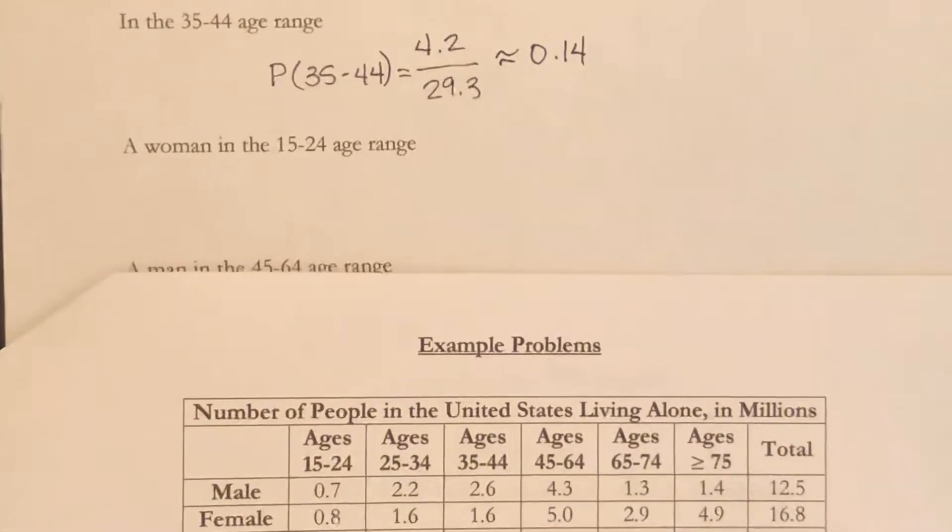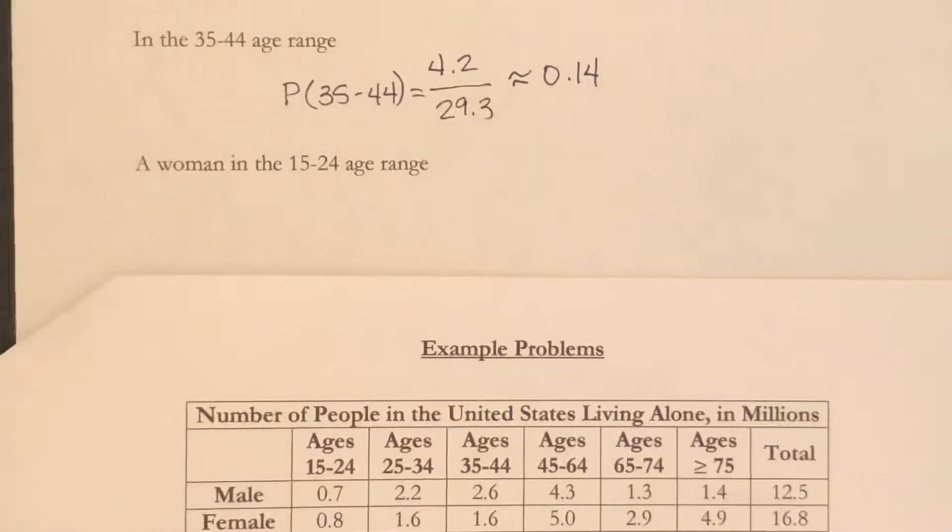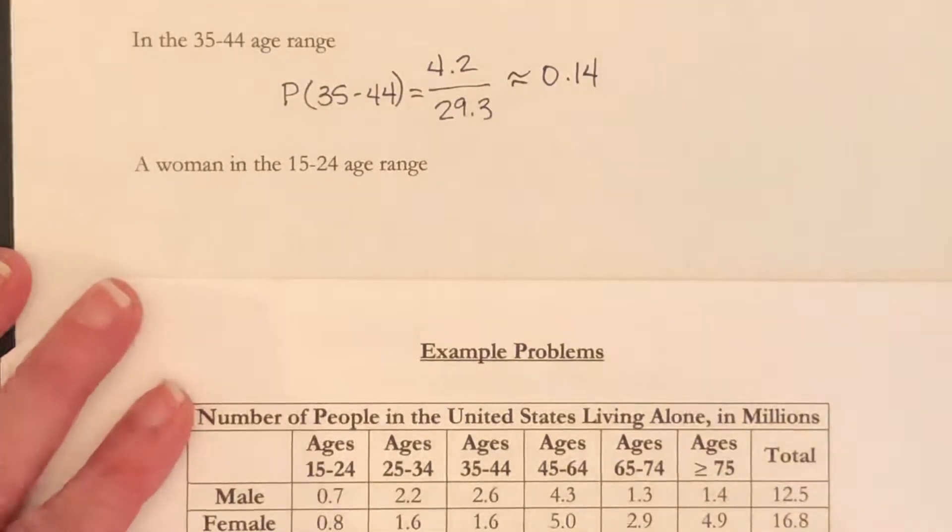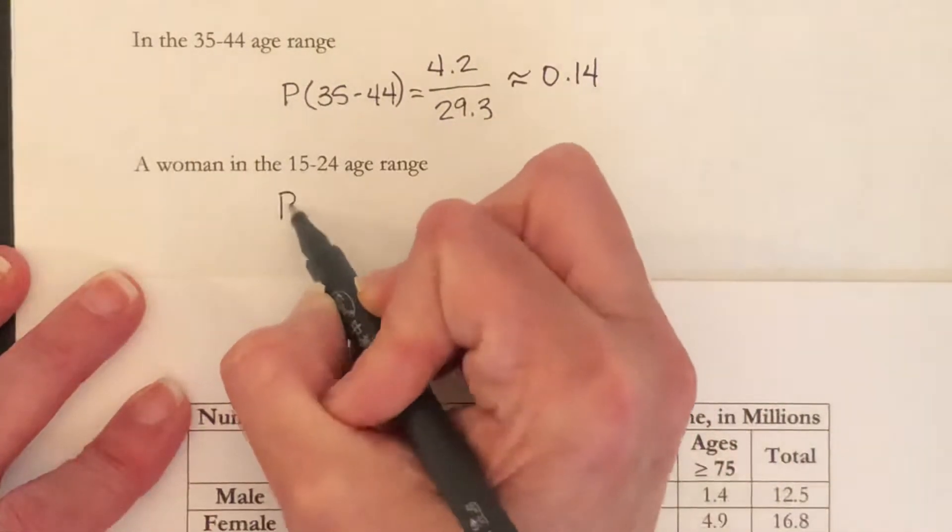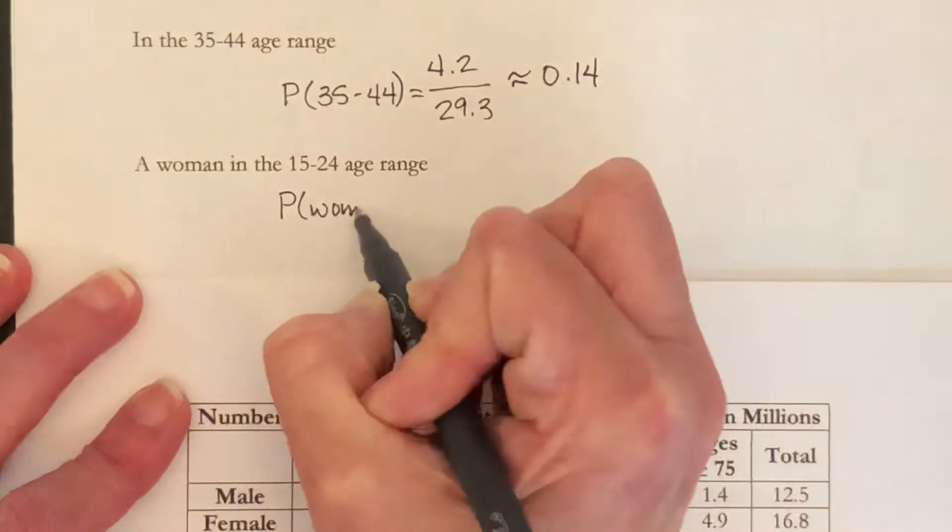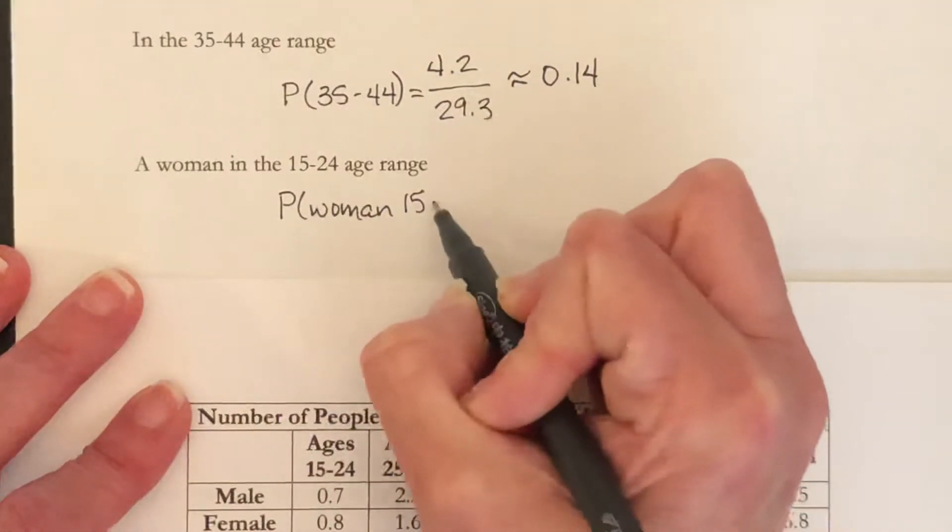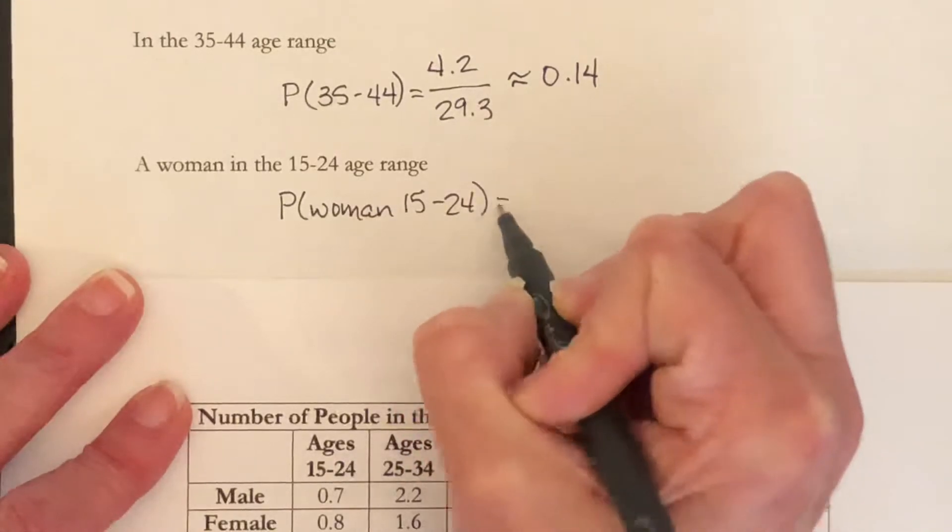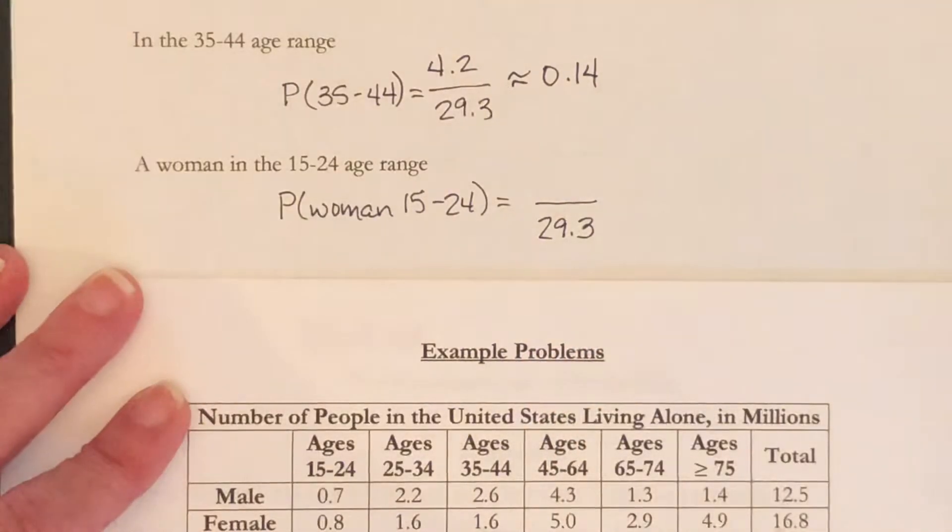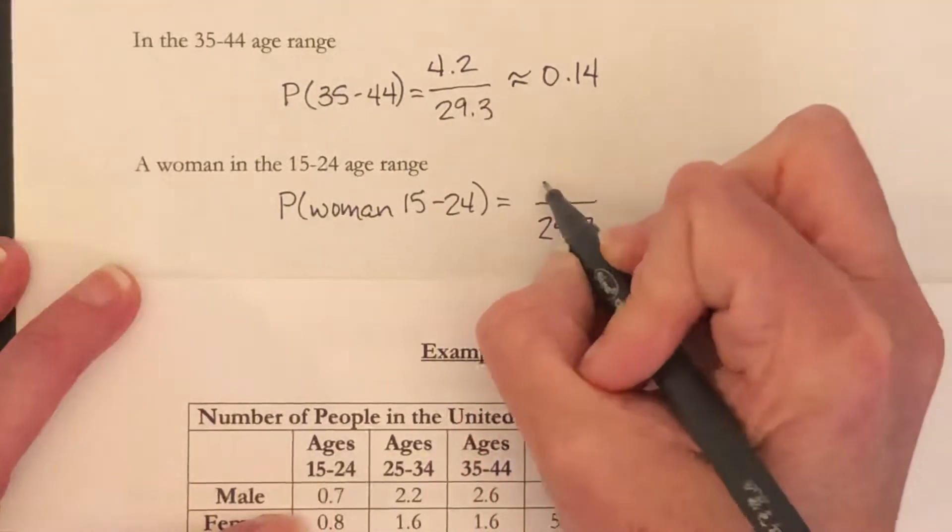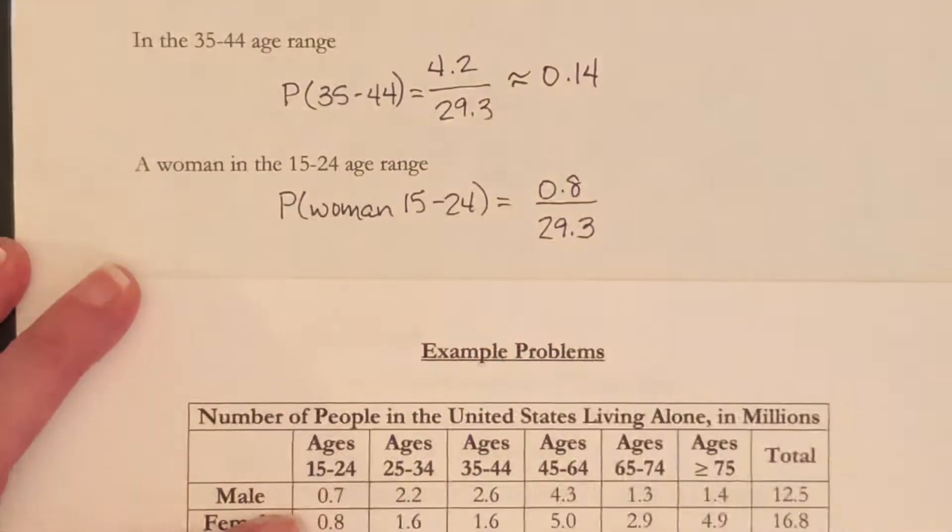What is the probability that we have a woman in the 15 to 24 age range? There are still 29.3 million people, and how many women are in the 15 to 24? 0.8. Do that division.